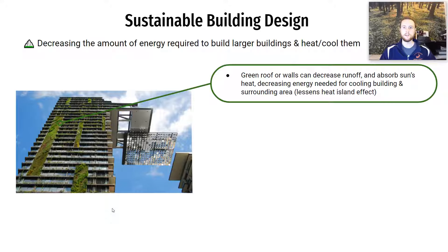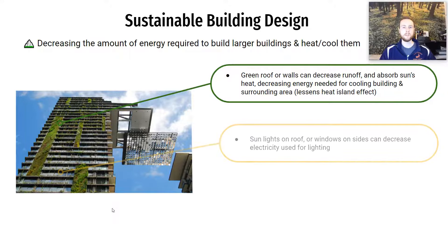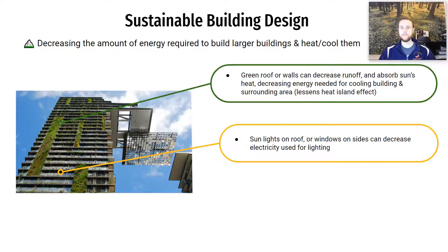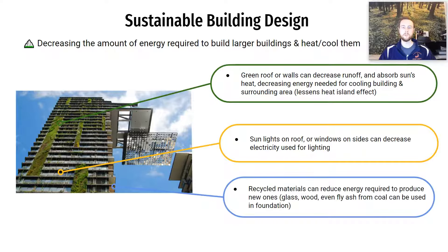We can also incorporate natural lighting through skylights in the roof or floor-to-ceiling windows, enabling more natural light and less electricity to be used to light the building. Finally, we can use recycled materials during construction. Glass is very recyclable, as is wood depending on its condition. We can even use fly ash from coal-fired power plants, which can be used to create gypsum wallboard for use in walls and building foundations.